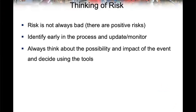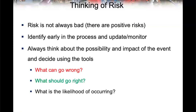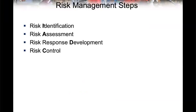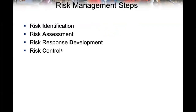Always think about possibility and impact. What can go wrong? What should go right? If you are a team leader, always ask your team these questions. The steps are identification — like a baby first gauges how high the bed is and decides it can't do it — that's identification and assessment. Then risk response development. Memorize it as I-A-D-C. Risk management has four steps: I-A-D-C, and then continue explaining them.